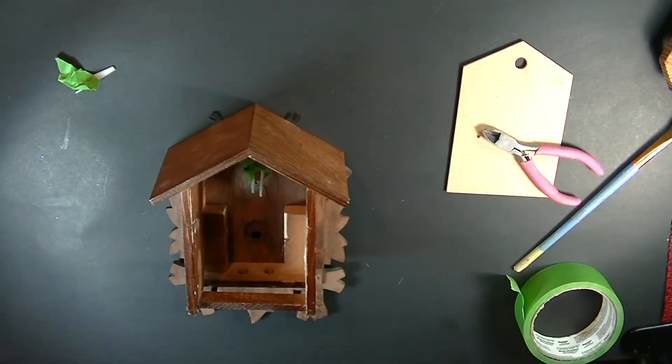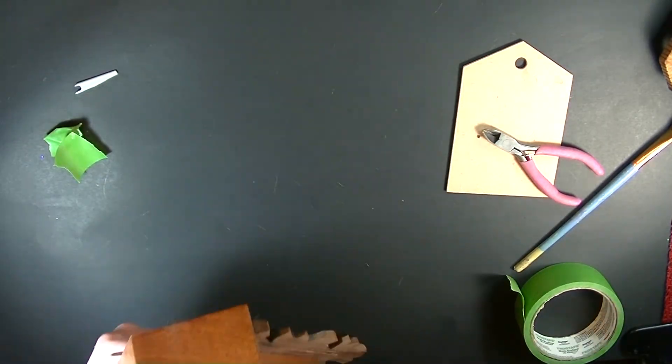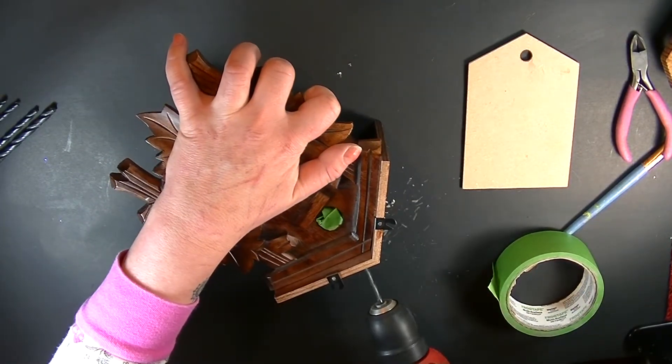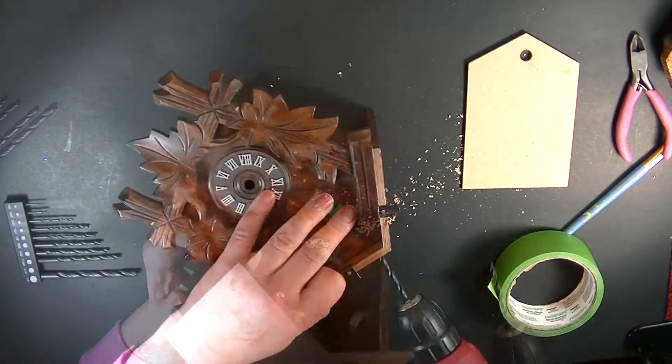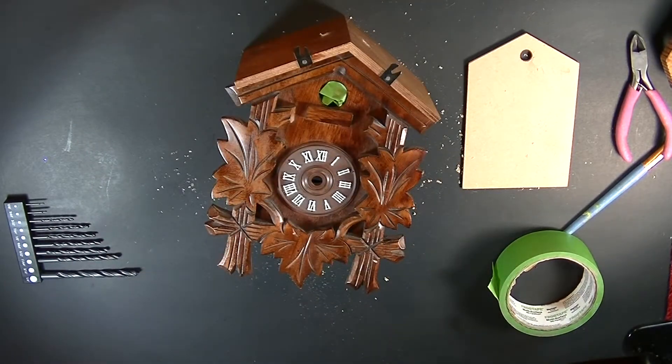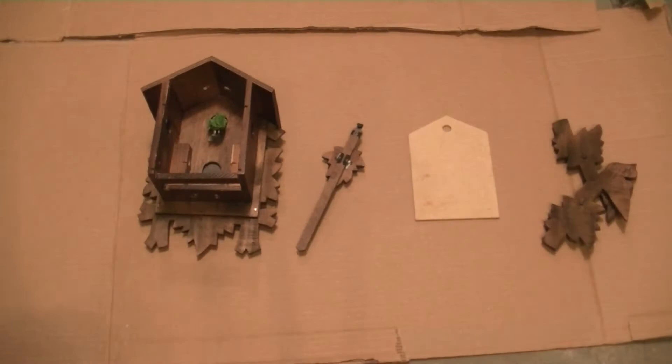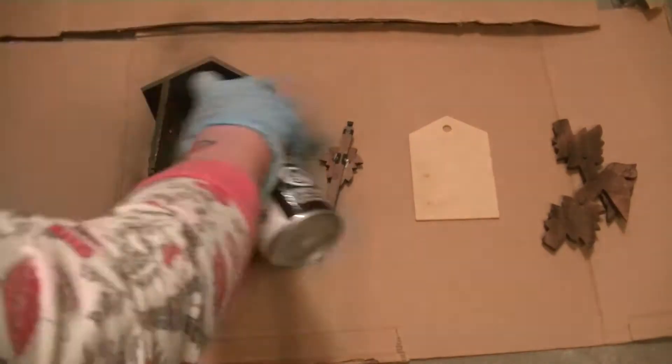So now I'm just taping it up because I'm going to paint this clock in camo colors and I don't want the bird to be camo colored. Drilling holes in the top to put some wire so that I can hang it, and now I'm spray painting it.